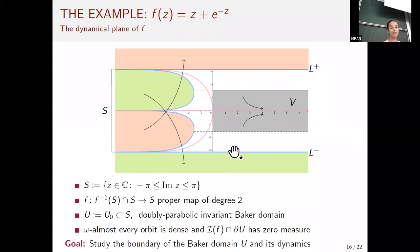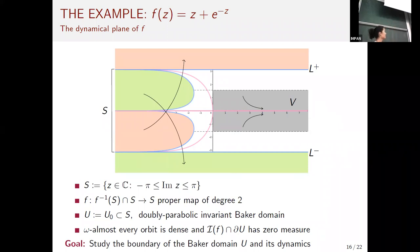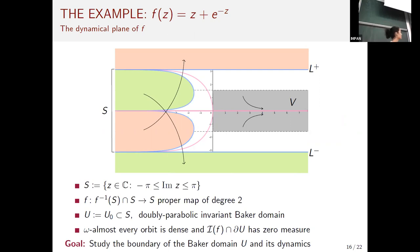Since we have a w-parabolic Baker domain of degree two, the boundary map is both ergodic and recurrent, so almost every orbit is dense. In particular, the escaping set in the boundary of U has zero harmonic measure, because its points cannot have dense orbits.